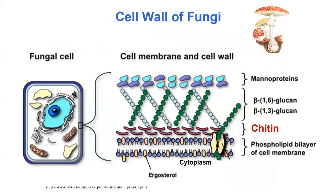Lastly, let's talk about the fungal cell wall. The fungal cell wall is very similar to the plant cell wall, except it has chitin instead of cellulose. Other than that, it's very similar — it has other proteins, glycoproteins, and carbohydrates that help things stick together, and the chitin does the same job as cellulose. The main thing to know is the word chitin for the fungal cell wall.